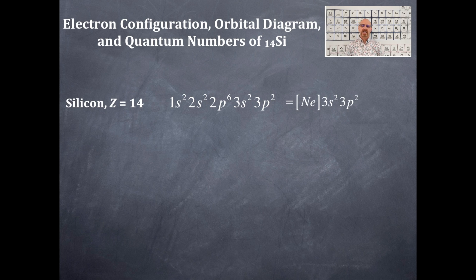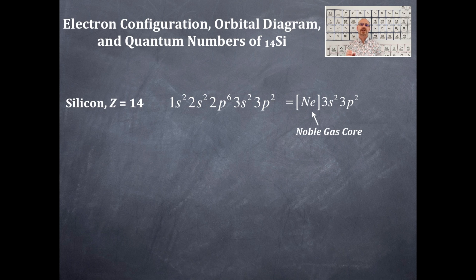We're going to write this another way using a noble gas core. That is the noble gas prior to the element of interest, which in this case is silicon. The noble gas prior to silicon is neon. Starting with neon, we're going to have neon in brackets — it cannot be in parentheses, it must be in brackets.